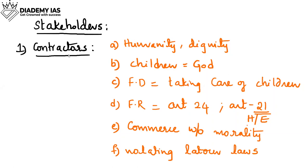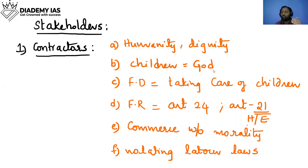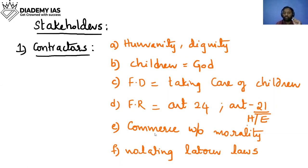In Indian culture, children are equated with gods, so using them for profit goes against Indian cultural values. Our fundamental duty is to take care of children. Article 24 of the Constitution prohibits child labor. The contractors are also compromising the girl child's health and education, violating her rights under Article 21 — the right to life. Gandhi's seventh sin, 'commerce without morality,' is what is displayed by the contractors.